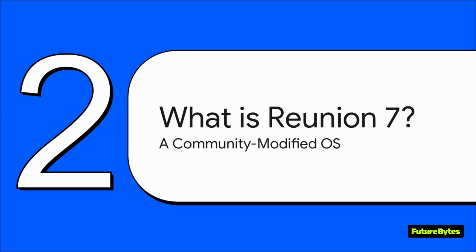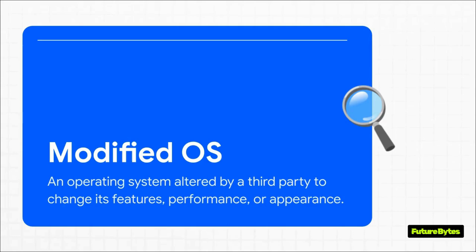So what in the world is Reunion 7? It's not just a theme pack or a fan page. It's a full-blown community-modified OS, and it takes us into a really interesting corner of the tech world. At its core, a modified OS is pretty much what it sounds like. A group of people who are not the original company — in this case, not Microsoft — take the original system and just start tinkering. They get in there, alter the code, add new features, strip out things they don't like.